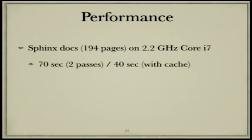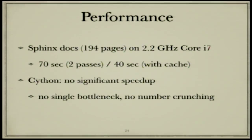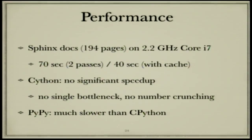A small note about performance: the Sphinx documentation is about 230 pages and takes about 70 seconds to render from scratch, or about 40 seconds with a cache file in place. I think this is not too bad for a Python document processor. I tried Cython but didn't get a big speedup, likely because I'm doing lots of things with lists and dictionaries rather than tight loops and number crunching. I also tried PyPy — unfortunately it was twice as slow as CPython. I've talked to Fijal about it and we'll have a look during the sprint.